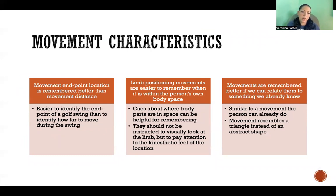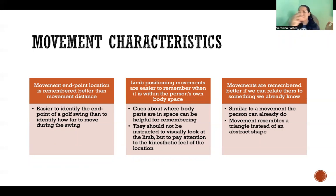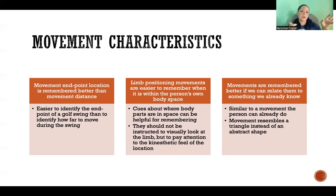Movement endpoint location is remembered better than movement distance. A good example is in a golf swing — it's easier to remember the endpoint location of your limbs than it is to remember the distance you're traveling to get to that endpoint. Research shows that if you move the endpoint and keep the distance the same, people struggle to complete the movement correctly. We're not very good at estimating distances, but we are very good at landing the endpoint. If we keep the endpoint the same, we can change the distance and be successful, but if we keep the distance the same and move the endpoint, we have a much harder time.